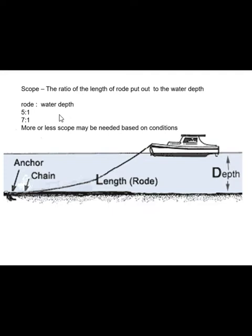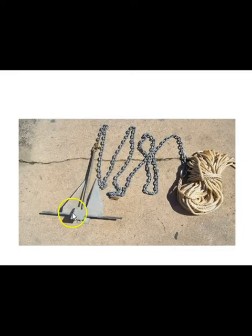You might need more or less scope depending on conditions. Under typical conditions you'd put out somewhere between 5 to 1 and 7 to 1. In really bad conditions where holding isn't good, you could go 8 to 1 or 10 to 1. If you're anchoring for a short period with good holding and mild conditions, you might anchor at only 3 to 1. The rode always goes first in the ratio and will be the bigger number.